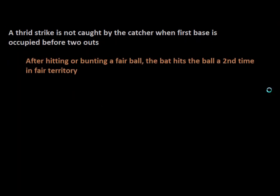So if the bat hits the ball a second time in fair territory, the batter is automatically out. However, there is a second part to that rule: if the batter simply drops his bat and is not intentionally hitting the ball, then the umpire can judge that play will simply continue and it's a fair ball.